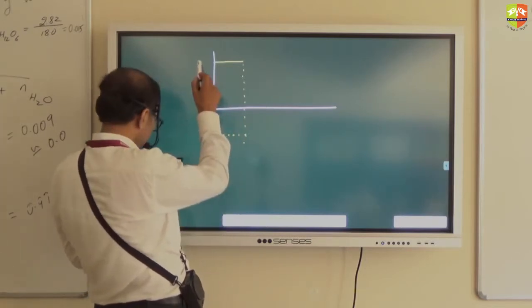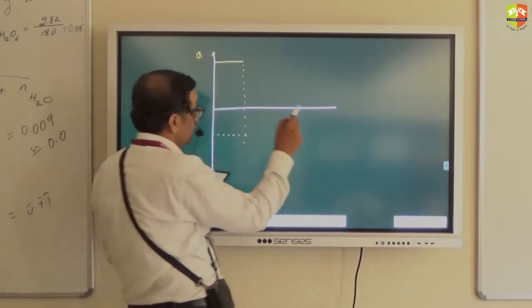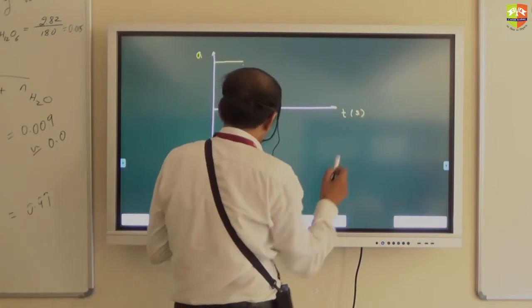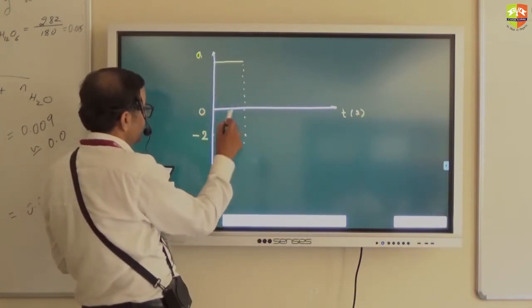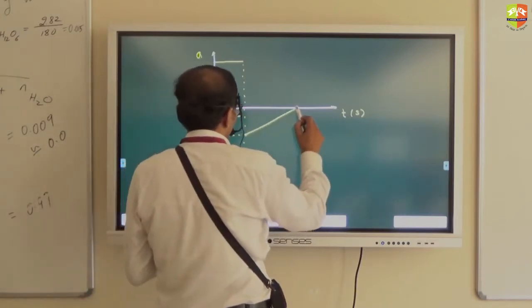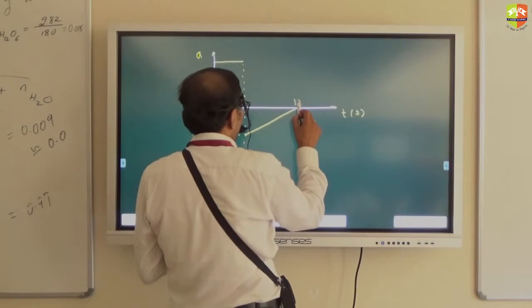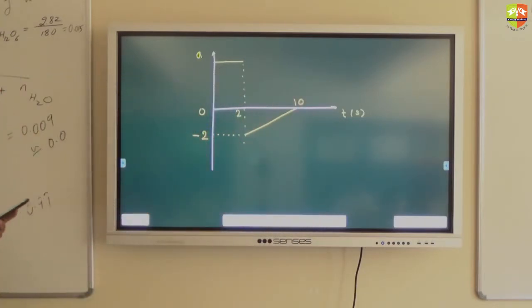This is acceleration versus time graph. Minus 2, 0, 2, 10. This is the plot.